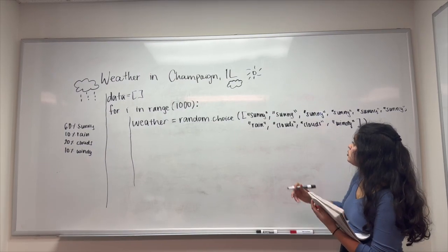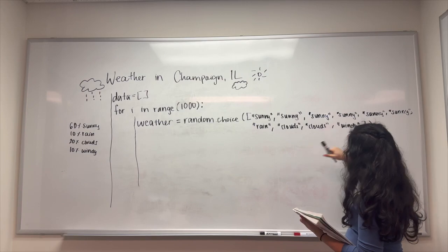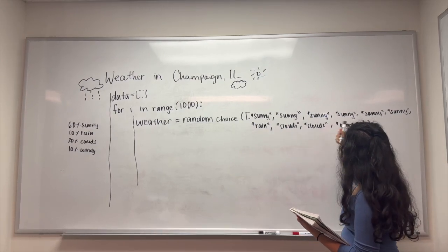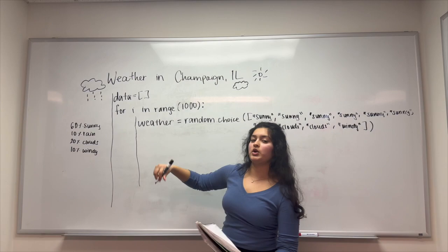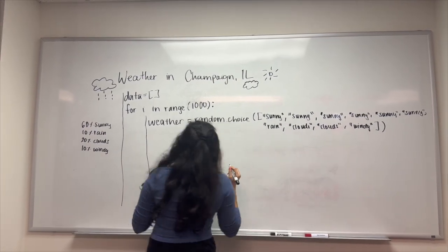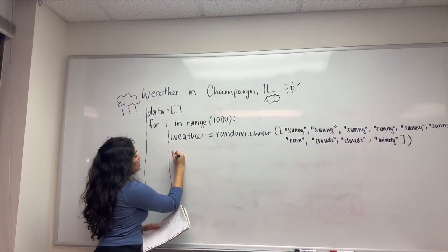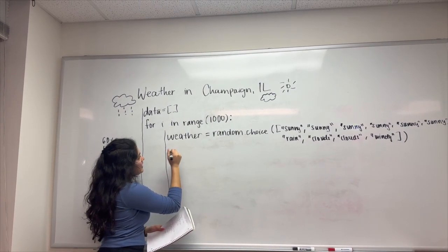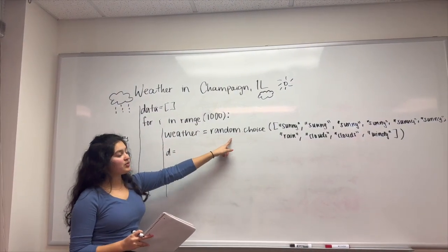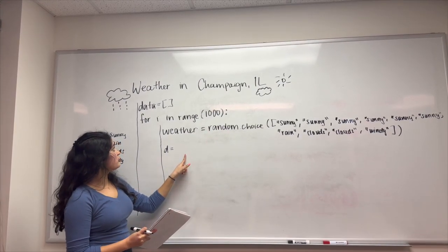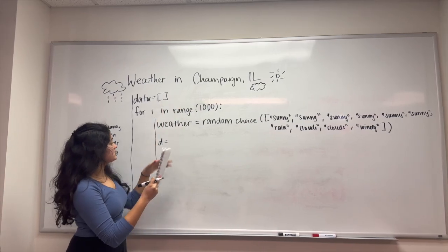Just to make sure, we'll count that there are 10 things in the list — 1, 2, 3, 4, 5, 6, 7, 8, 9, 10 — which means it should be simulating 100% of the time. From here, we'll use dictionary syntax to put the result from random.choice into a dictionary, which will then be appended to the empty list.